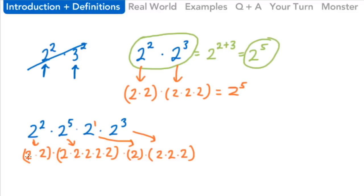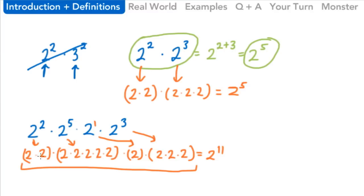And at the very end, we've got to multiply that by 2 times 2 times 2, which is 2 to the 3rd. Going through this whole thing, we count eleven 2s, so this equals 2 to the 11th power. The quick way is just to add the exponents: 2 to the 2 plus 5 plus 1 plus 3. Two plus 5 is 7, plus 1 is 8, plus 3 is 11 — so we get 2 to the 11th power.